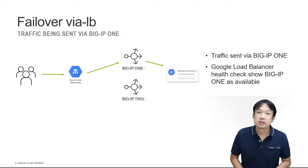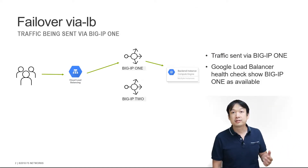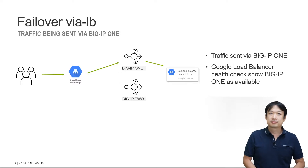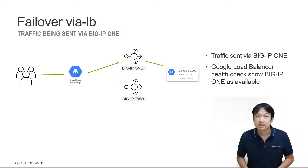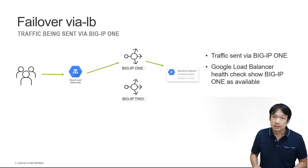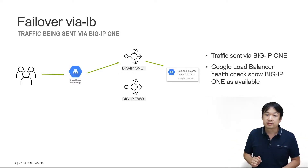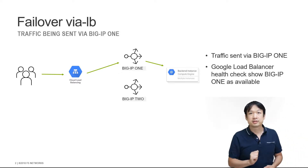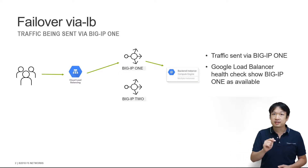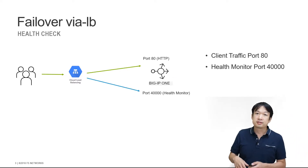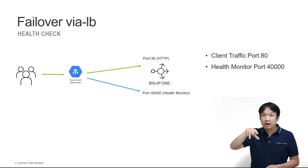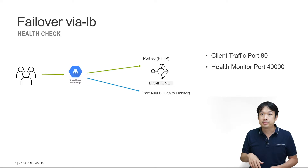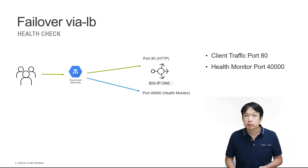So let's talk about how failover works in Google Cloud using the Google Cloud Load Balancer. What we can see here on this diagram is we have the client connecting into Google Cloud. It's going through the Google Cloud Load Balancer, and then from there it's going over to the BIG-IP. Once it hits the BIG-IP, the traffic's going through. You'll also see that the Google Cloud Load Balancer is doing health checks to the BIG-IP.